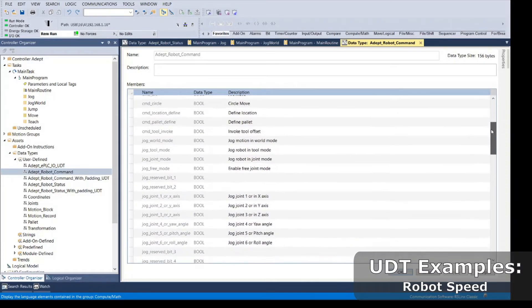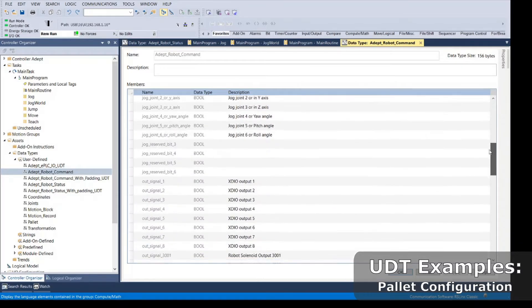An example of some UDTs might be robot speeds, accelerations, positions, or even palette configurations.